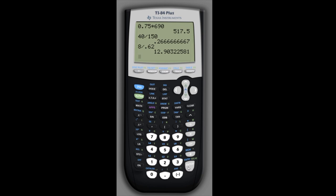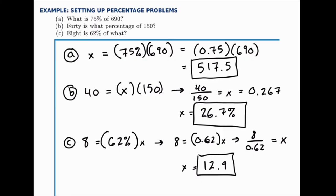And, we could be picky with how far we round this, but we won't worry about it too much for now. We'll just say 12.9. So, the answer to Part C is that 8 is 62% of approximately 12.9.